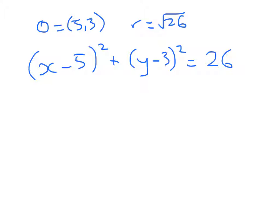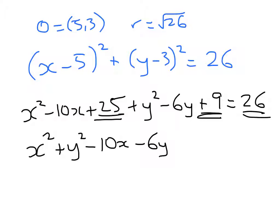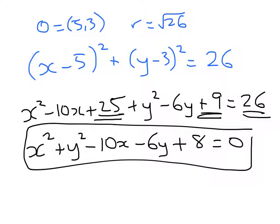In expanded form, what do we have? Well, we'll expand that out and we get x squared minus 10x plus 25 plus y squared minus 6y plus 9 equals 26. x squared plus y squared minus 10x minus 6y and then I've got plus 25 and 9 here. So I've got 34. Take away 26 leaves me with a plus 8 equals 0. So that is in expanded form.